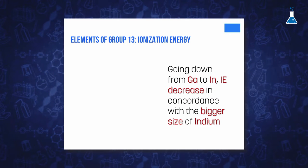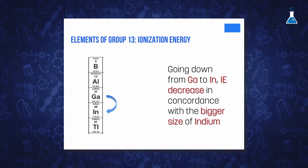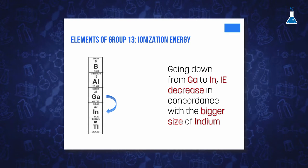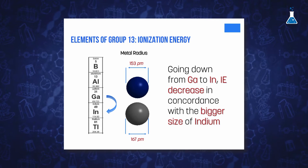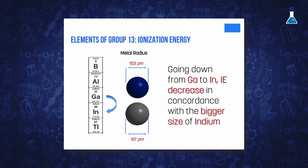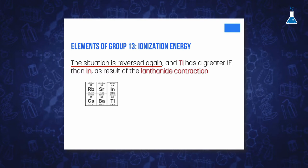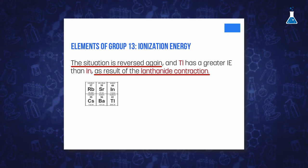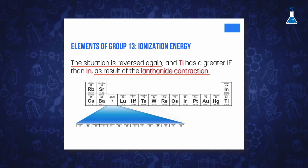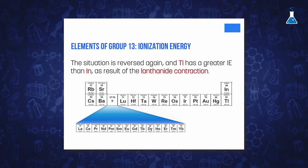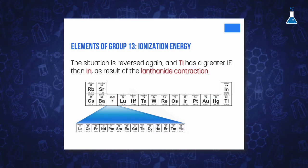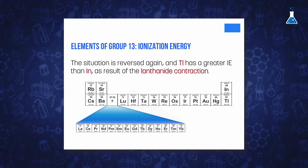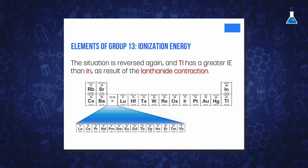Going down Group 13 from Gallium to Indium, we find a decrease in ionization energy, which is in concordance with the bigger size of Indium, so no new contraction occurs. However, the situation is reversed again when we go from Indium to Thallium, as a result of the additional influence of the lanthanide contraction. The low screening power of d and f electrons leads to an increase of the effective nuclear charge and a reduction in size. Additionally, the inert pair effect is reinforced by the relativistic contraction of s and p orbitals.